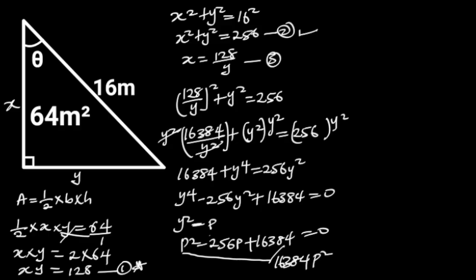Next, we find the factors of 16384 p squared that when added together will give us minus 256p, that is, the second term of this equation. These factors are minus 128p and minus 128p.